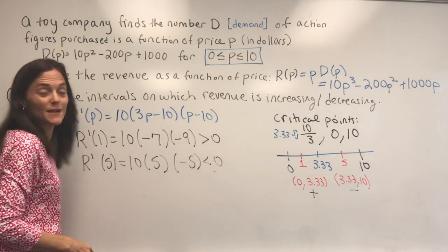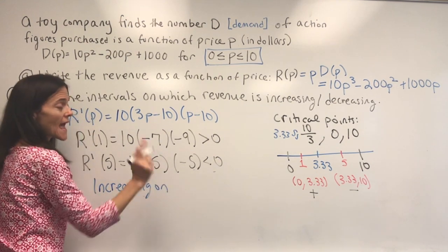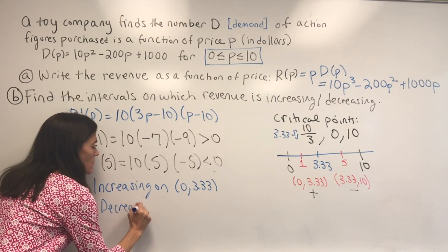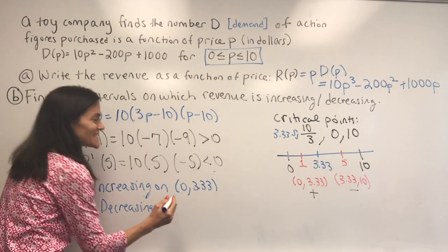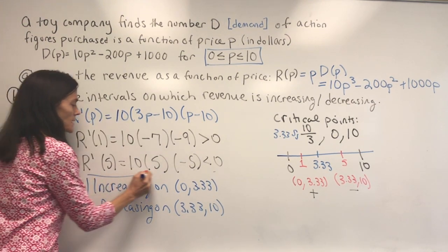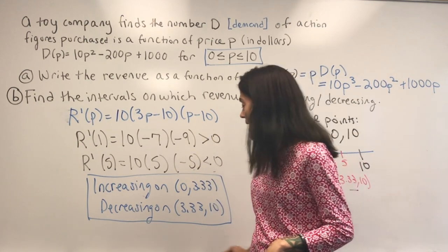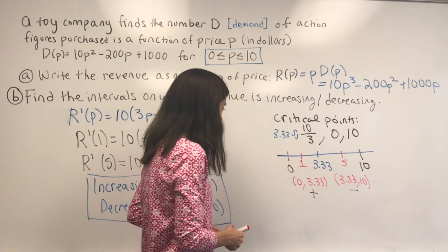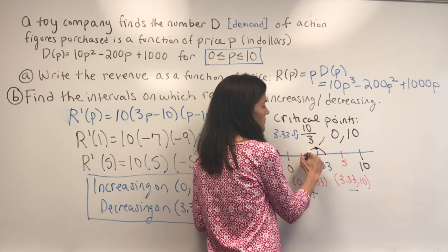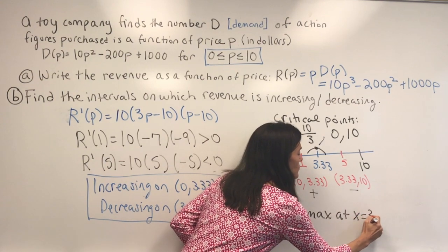Now we're ready to finish the problem. The revenue function is increasing on everywhere we see a plus: that's 0 to 3.33. It's decreasing on everywhere we see a minus: that's 3.33 to 10. This did not ask about local or global maxima or minima, but if it did, having a plus then a minus tells us we are increasing and then decreasing, so we would have a local max at x equals 3.33.